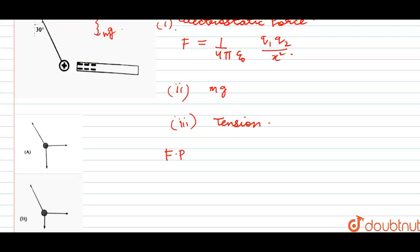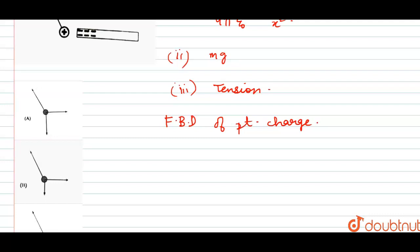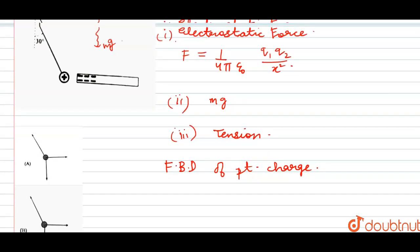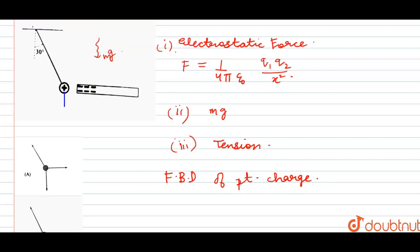In the free body diagram of the point charge, we have the mg force pointing downwards, the electrostatic force pointing rightward, and the tension at an angle of 30 degrees with the vertical.